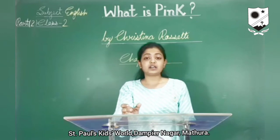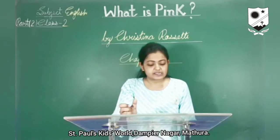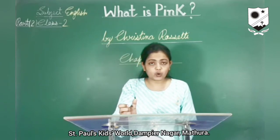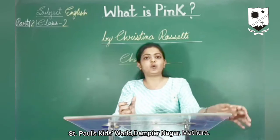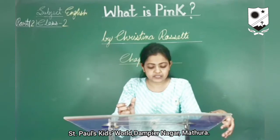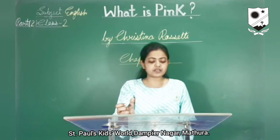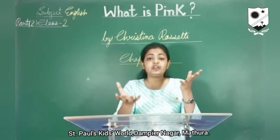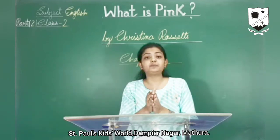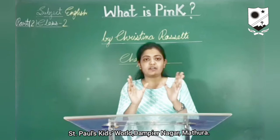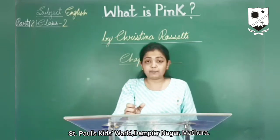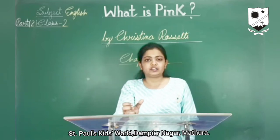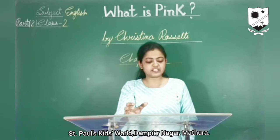Now what is white? A swan is white, sailing in the light. A swan sails in the light. Now what is yellow? Pears are yellow. Pears are a kind of fruit that we eat. The pears are yellow, rich and ripe and mellow. Rich means fully loaded, ripe means when they are perfectly ripened, and mellow means juicy and tasty. So the pears are yellow, rich, ripe, and juicy.